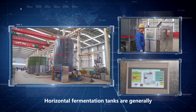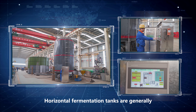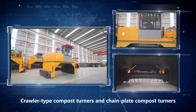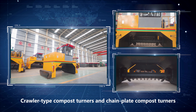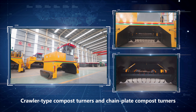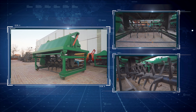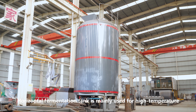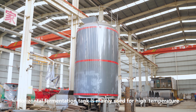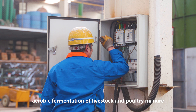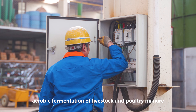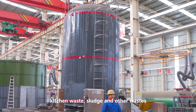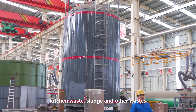Horizontal fermentation tanks are generally used in the fermentation process, including the Corollary type compost turners and chain plate compost turners. The horizontal fermentation tank is mainly used for high-temperature aerobic fermentation of livestock and poultry manure, kitchen waste, sludge and other waste.